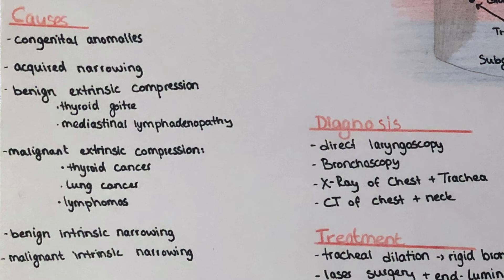The last group of causes is the malignant intrinsic narrowing factors, which include head and neck cancers, primary tracheal cancers, erosive thyroid cancer, erosive oesophageal cancer, and lung cancer.